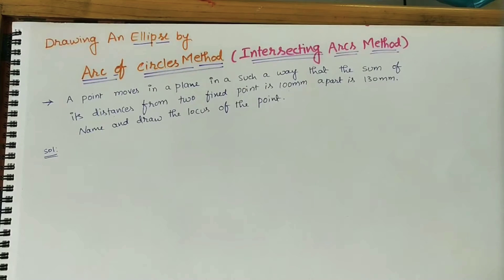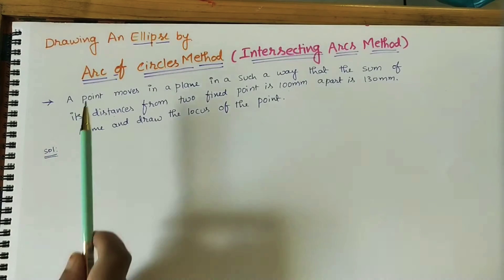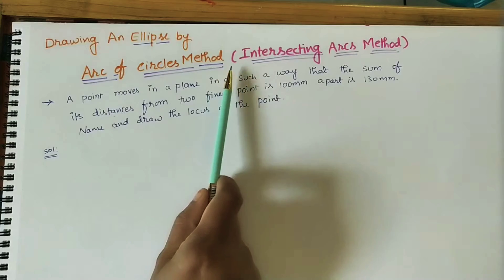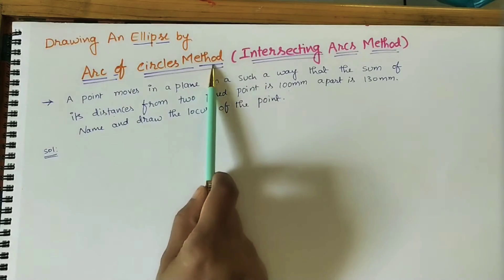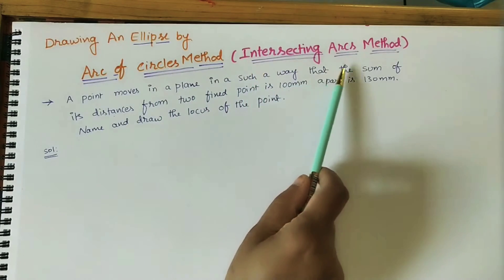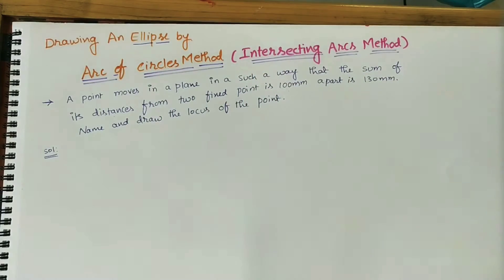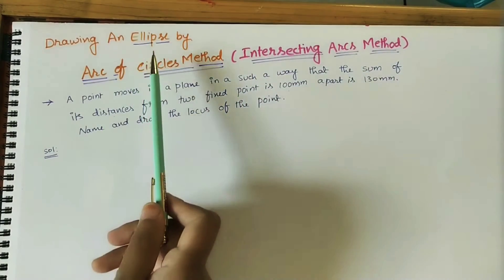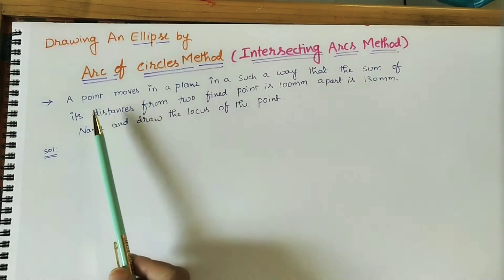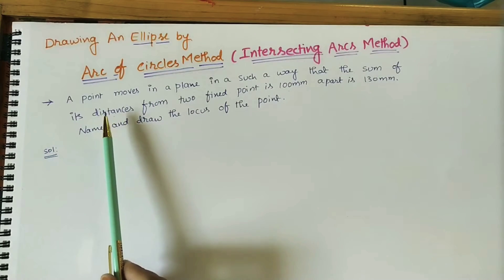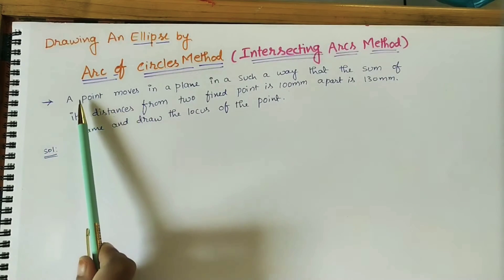In today's class we will discuss how to draw the ellipse by using the arc of circle method, also known as the intersecting arcs method. For doing the ellipse we need some data, so I took a textbook question for getting the data.